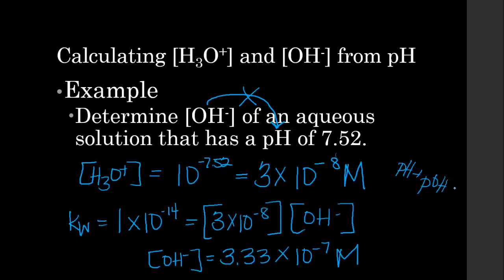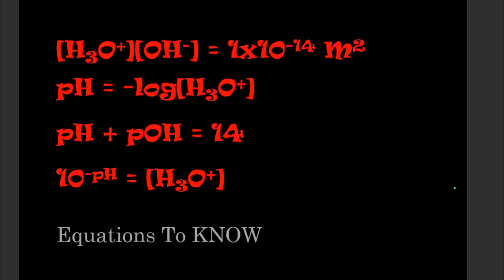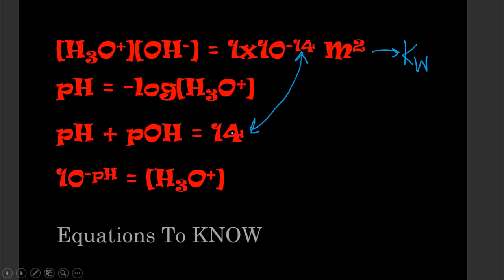After watching this whole video — and there's a lot to soak in — let's review the key equations. First, the Kw equation: [H₃O⁺] × [OH⁻] = 1×10⁻¹⁴. Second, pH = −log[H₃O⁺], and similarly pOH = −log[OH⁻]. Third, pH + pOH = 14 — notice that 14 comes directly from the Kw equation. And finally, [H₃O⁺] = 10^(−pH), which lets us work backwards from pH to find the hydronium ion concentration.